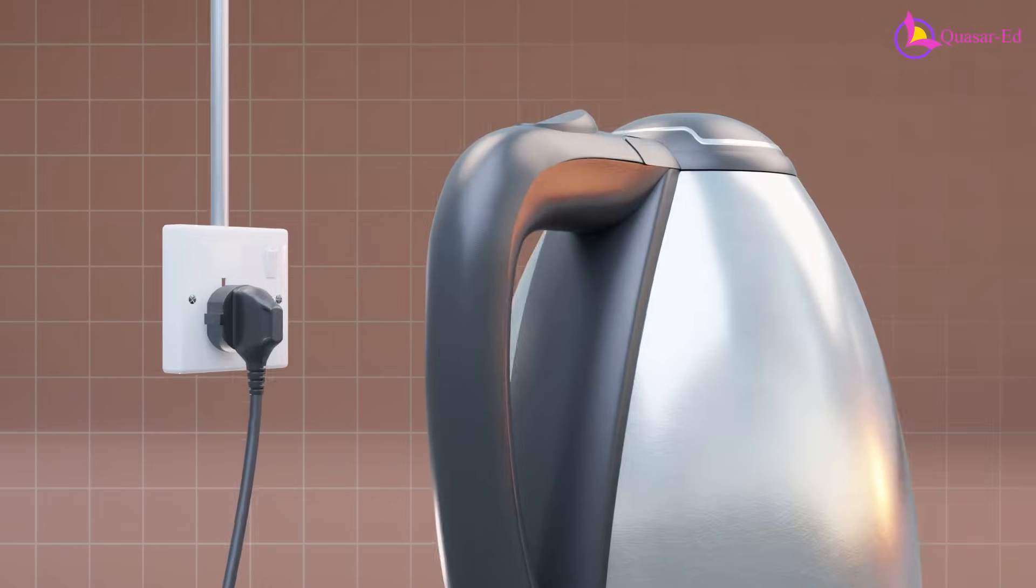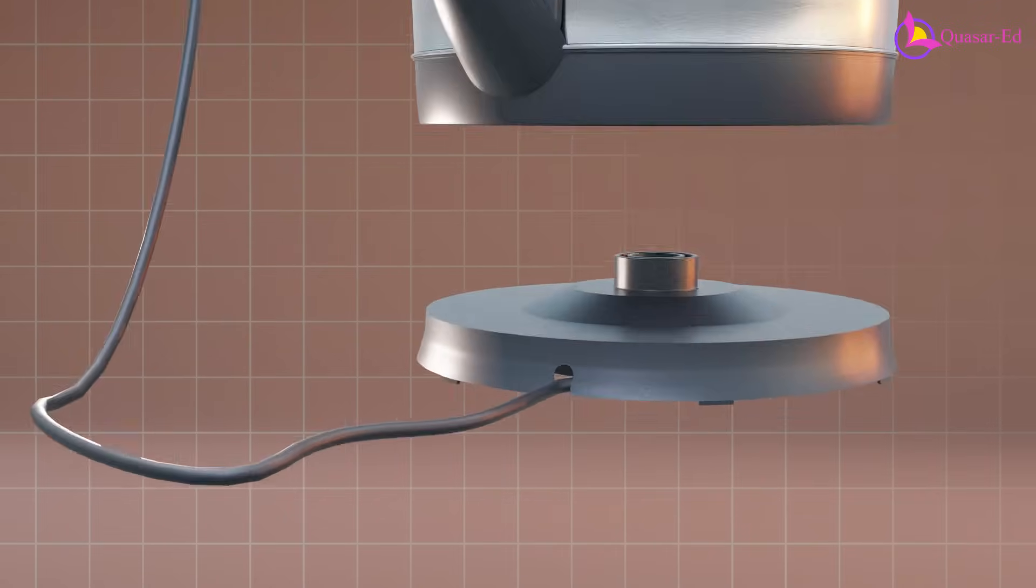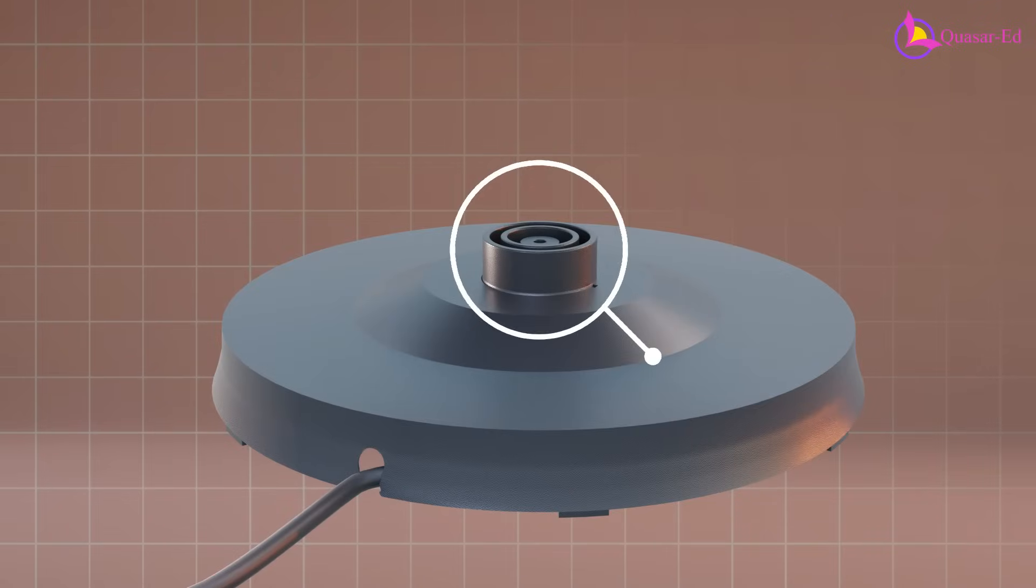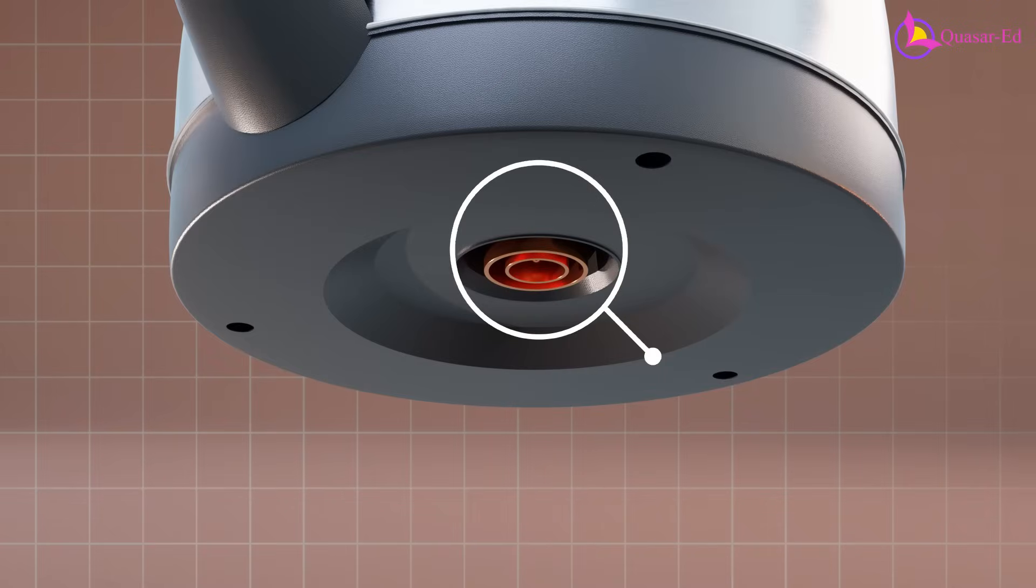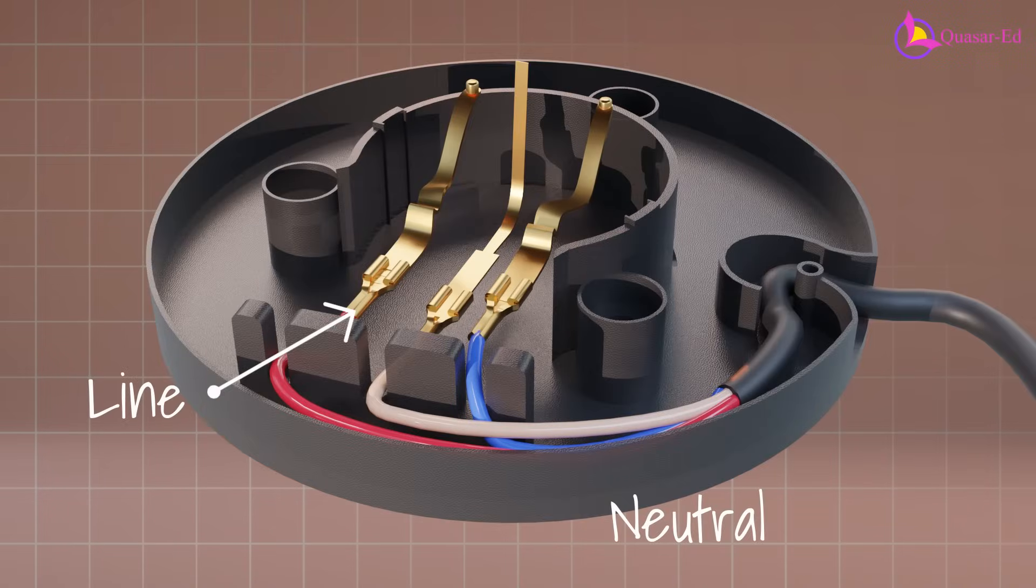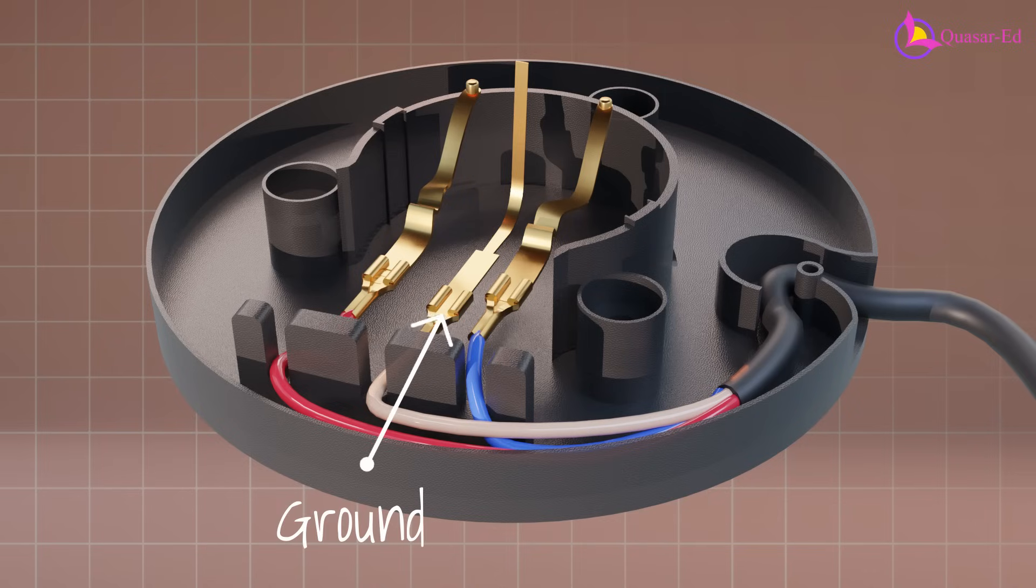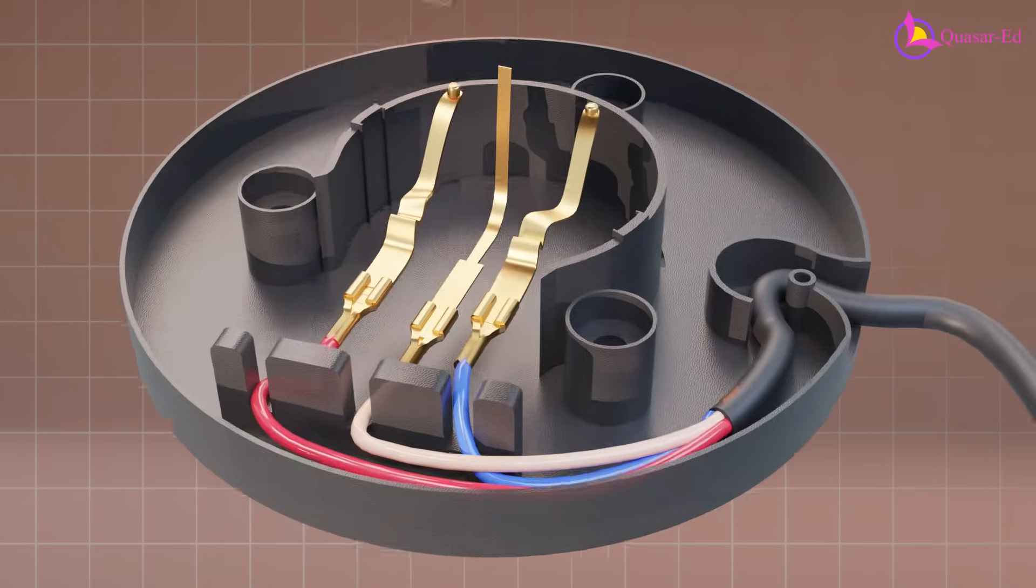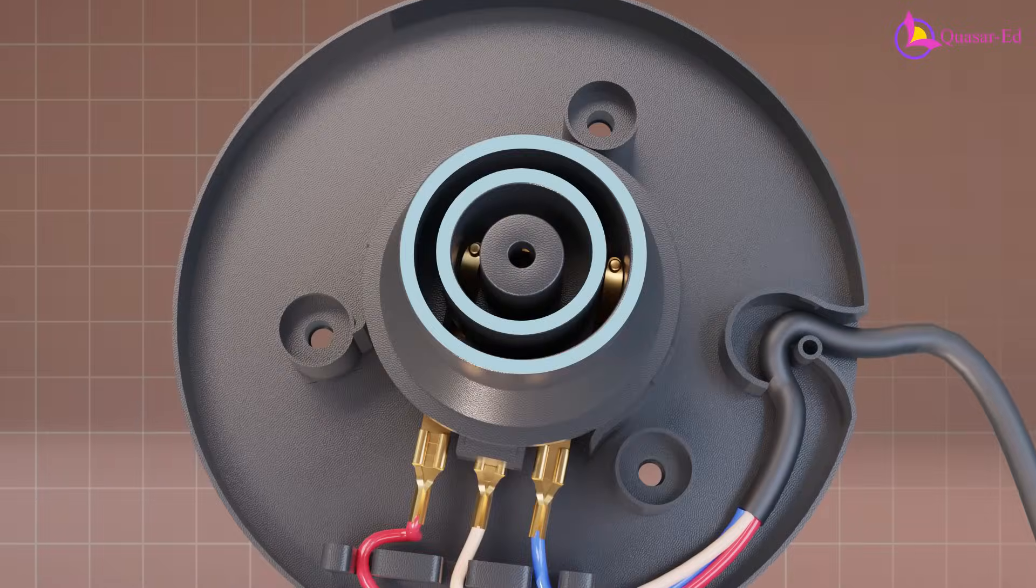Let's see how the electricity gets inside the kettle body. The base has a cylindrical male connector and the underside of the kettle body has a female socket. Inside the base, the line and neutral wires are connected to two copper strips and a ground wire is connected to the copper strip at the center. These copper strips are separated by circular walls.